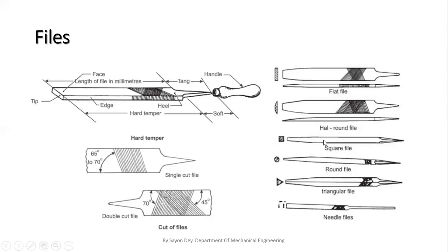Next is the square file. It is square in section and carries double cut teeth on all four faces. Due to its squareness, it is tapered for one-third of its length towards the point — the tip is also called the point, and this end is called the heel. So we work from tip to heel.